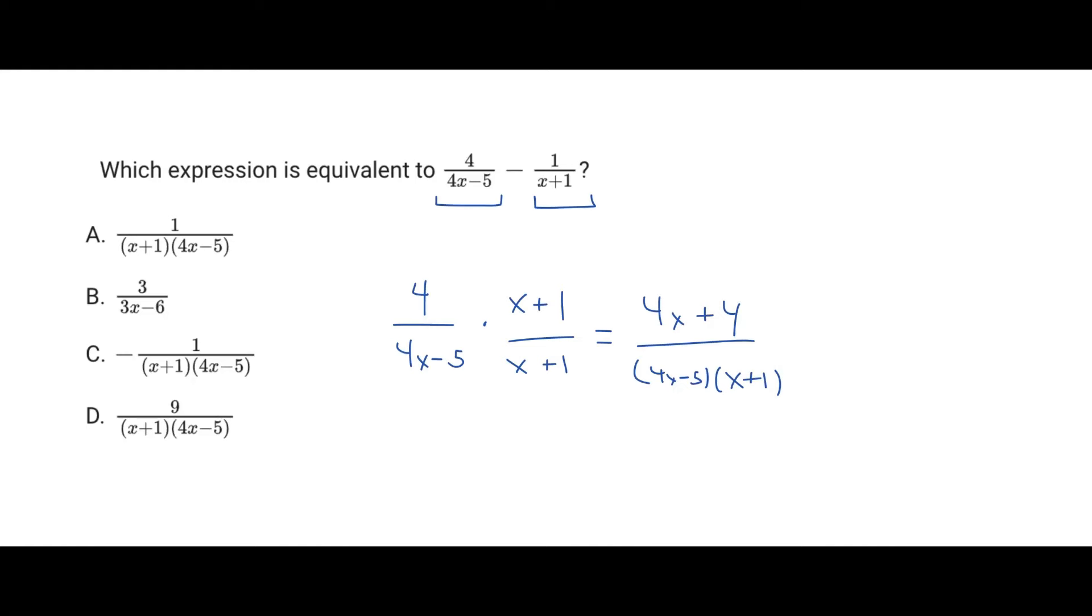And so now we'll just want to do the same thing to the other side. So here we're going to have this term, 1 over x plus 1. We're going to be multiplying this by 4x minus 5 over 4x minus 5. And so therefore we will get 4x minus 5 over, and then we get x plus 1. So that's just going to be the same thing, 4x minus 5 and then x plus 1.